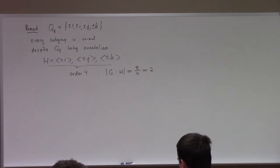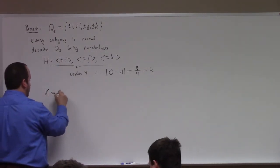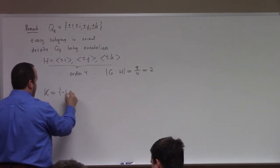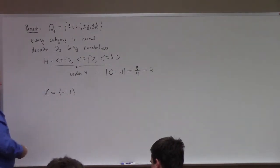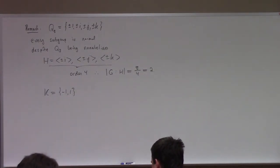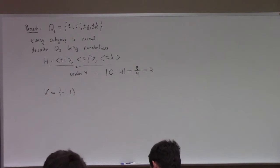The other subgroup you can think about in Q8 is just the {-1, 1} subgroup, which is also the center of Q8. So that commutes with everything, and it's also a normal subgroup. Anyway, all the subgroups you can find in Q8 are normal.